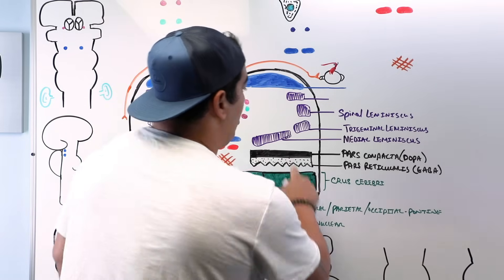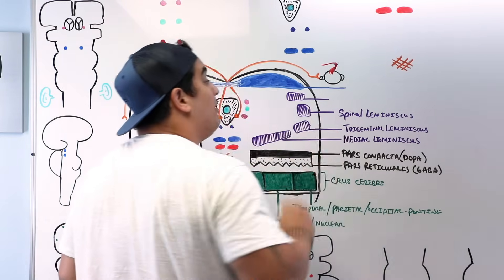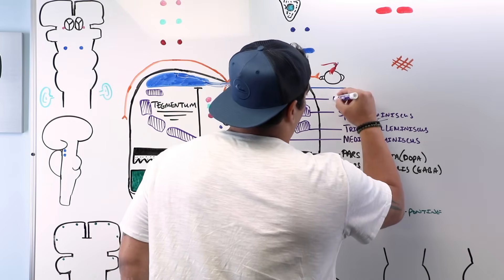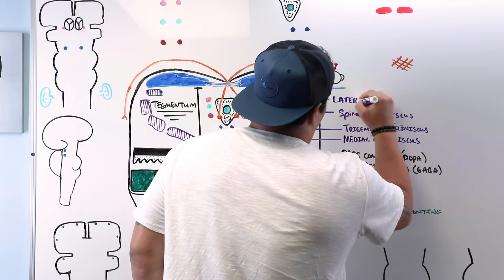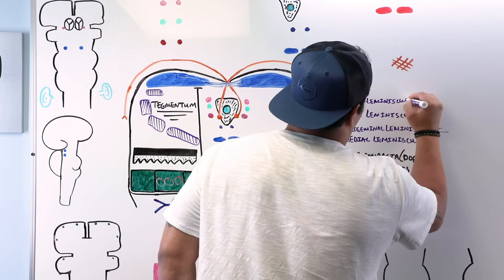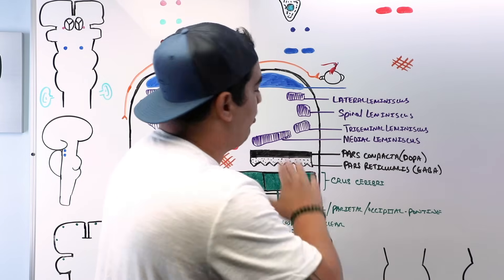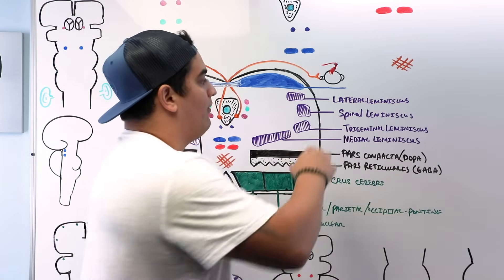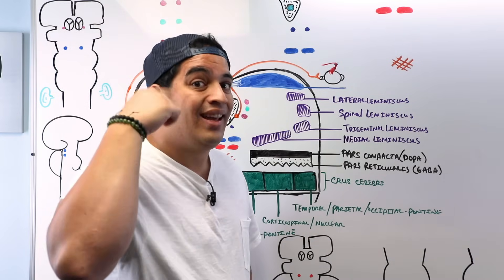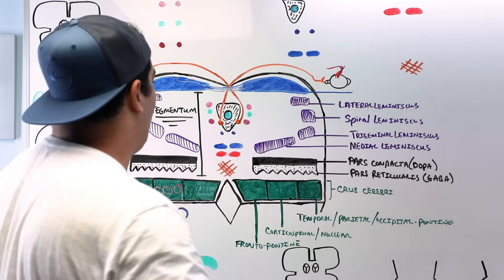So we have the medial lemniscus, trigeminal lemniscus, and spinal lemniscus. The most lateral structure here is the lateral lemniscus, which is involved with the auditory pathway — specifically carrying information from the cochlear part of the vestibulocochlear nerve.